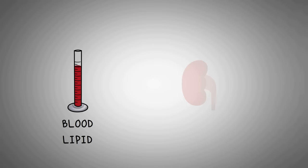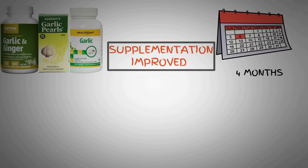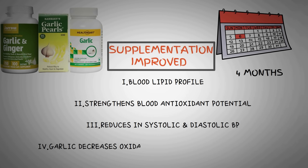At the end of four months, the researchers concluded that the garlic extract supplementation improves blood lipid profile, strengthens blood antioxidant potential, and causes significant reduction in systolic and diastolic blood pressure. It also leads to decrease in the level of oxidation products in the blood samples, which demonstrates reduced oxidative stress in the body. In other words, garlic extract supplementation reduced high cholesterol levels and also high blood pressure levels in patients with hypertension.